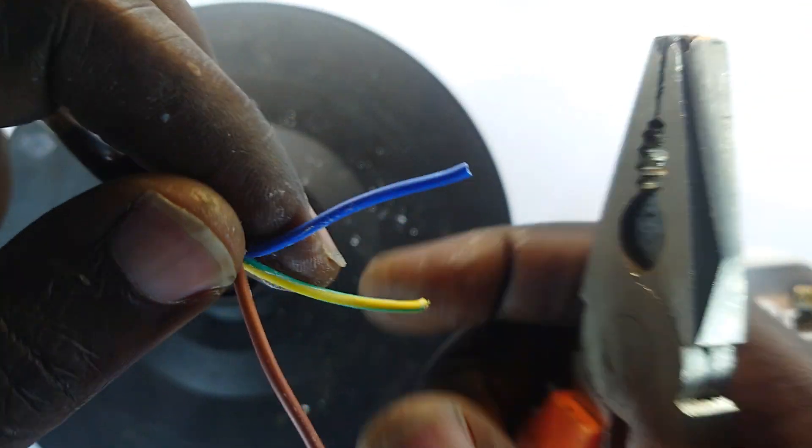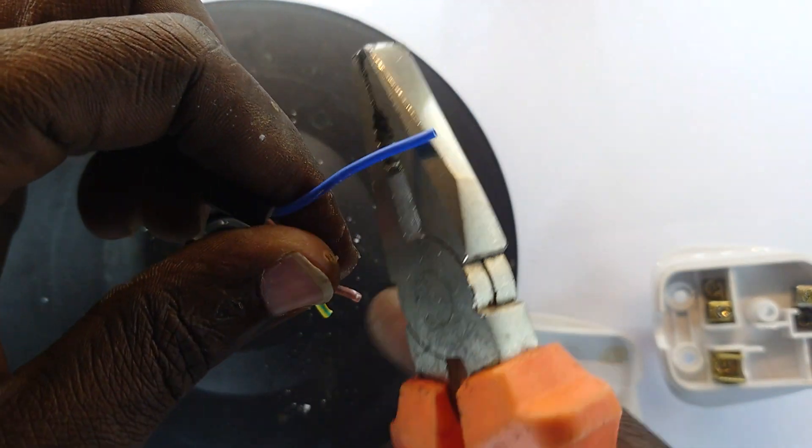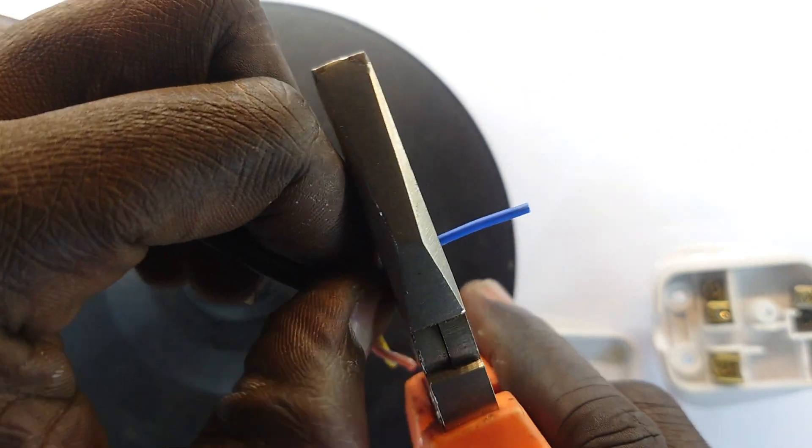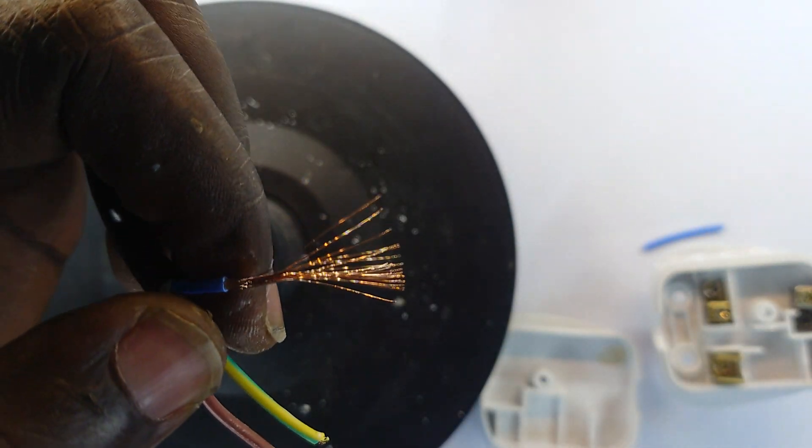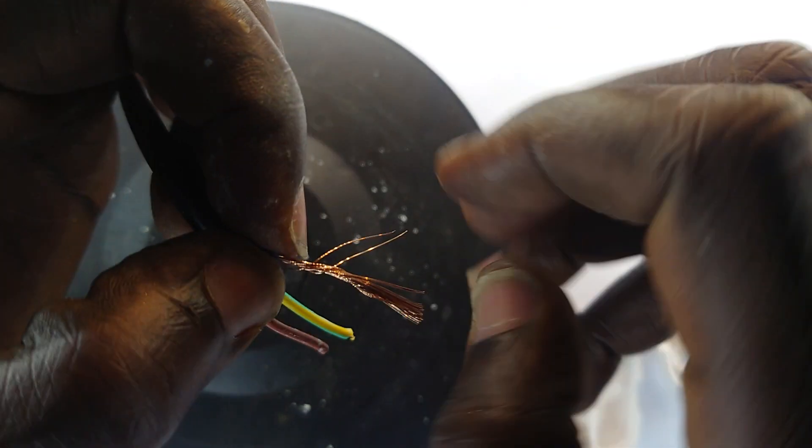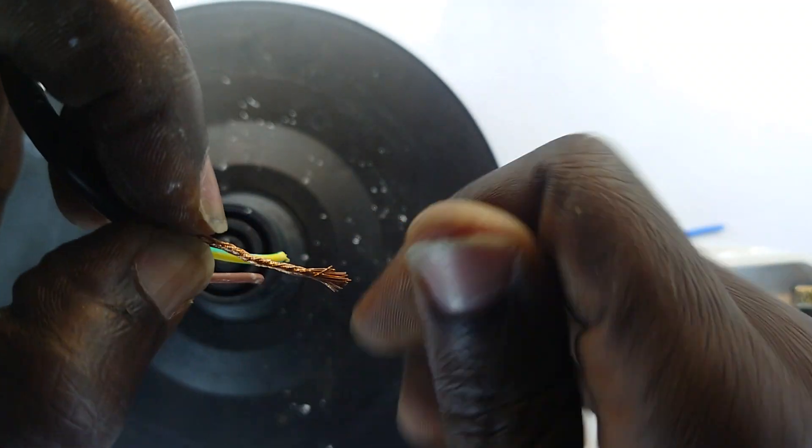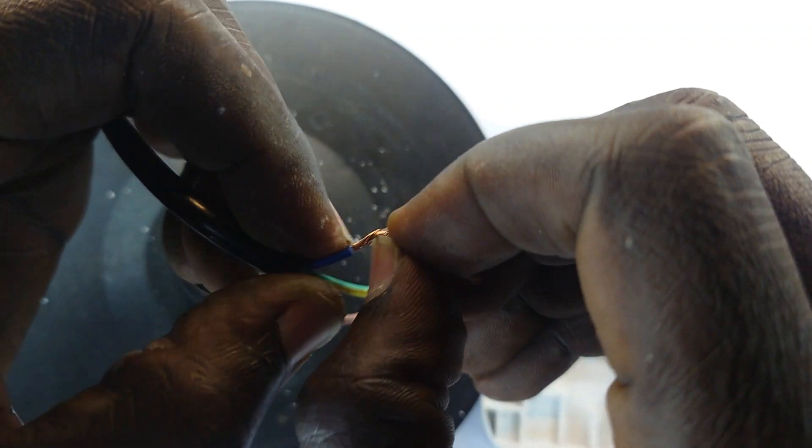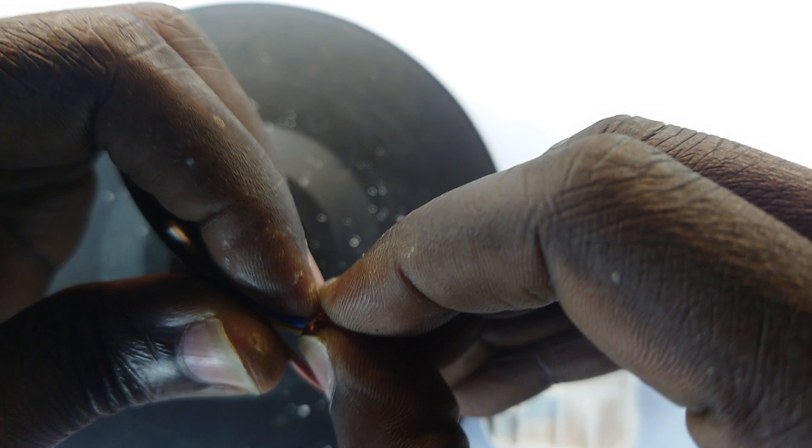I'm going to use my pliers to twist this around itself and then fold it a couple of times to provide enough contact area when I put it in. Let's go for the live wire. We twist it and then turn it to create a blob.